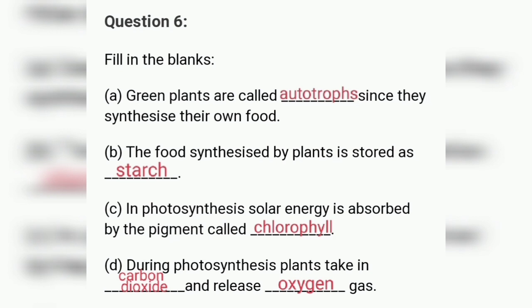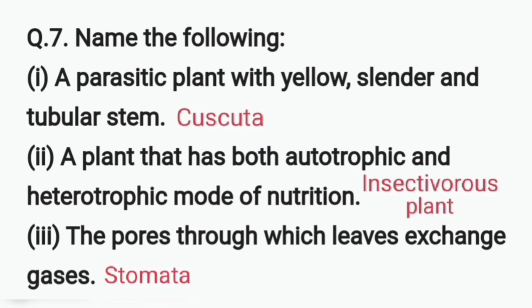Question seven: name the following. A parasitic plant with yellow, slender, and tubular stem — that is Cuscuta. A plant that has both autotrophic and heterotrophic modes of nutrition — that is insectivorous plants. The pores through which leaves exchange gases — those are called stomata.